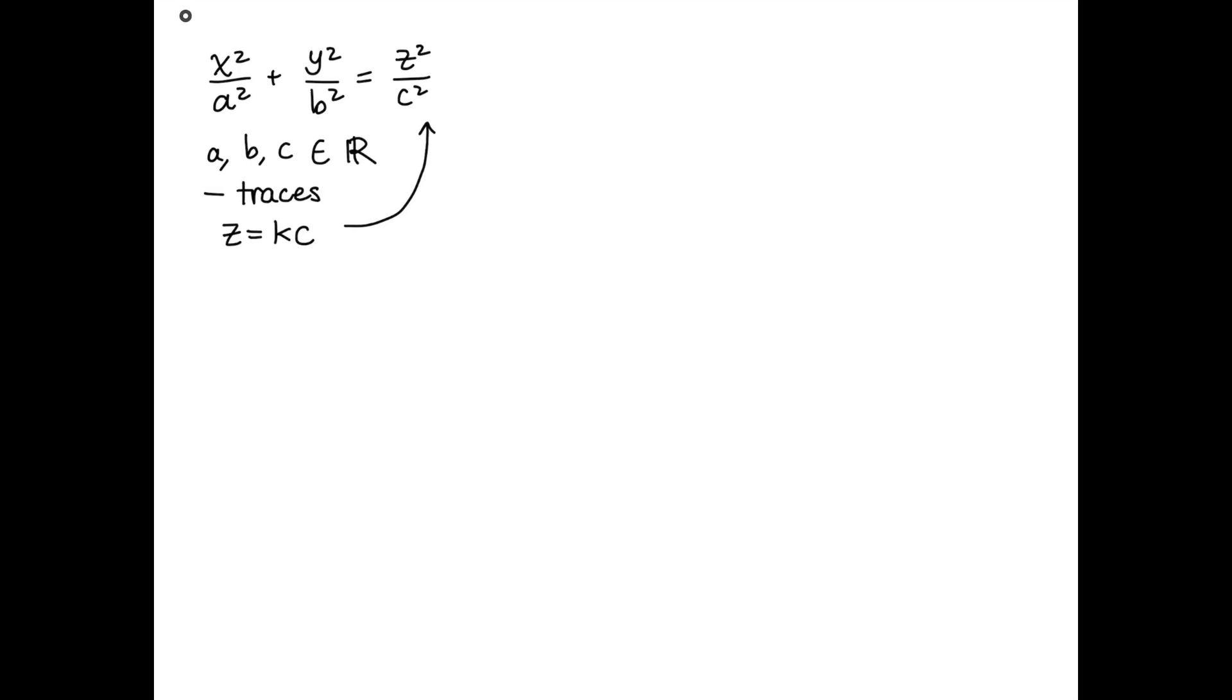Once we have this new definition, let's say that k is equal to one, in which case we have z is equal to c. Then our original equation now becomes x squared over a squared plus y squared over b squared is equal to c squared over c squared, which is just one. So now we get the equation x squared over a squared plus y squared over b squared equals one.